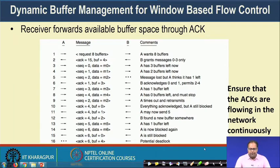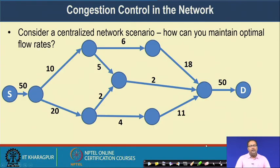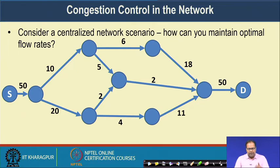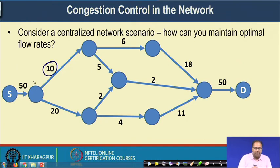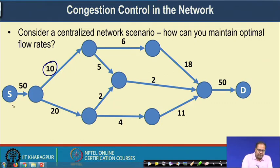This is the concept of dynamic buffer management at the transport layer. Now we look at another important aspect: congestion control. To understand it, consider a centralized network scenario where each edge has a weight signifying the capacity of that link. To find the maximum capacity of a flow from A to D, we apply the max-flow min-cut theorem.